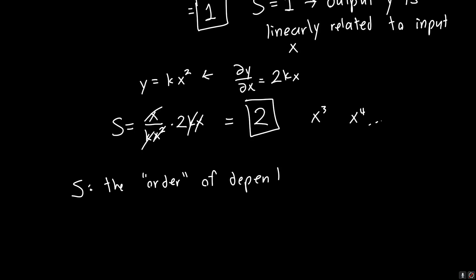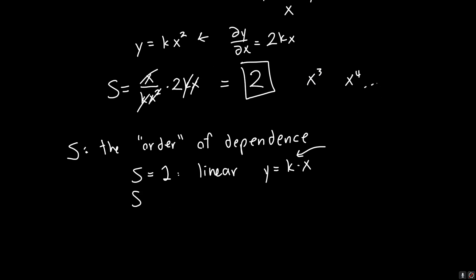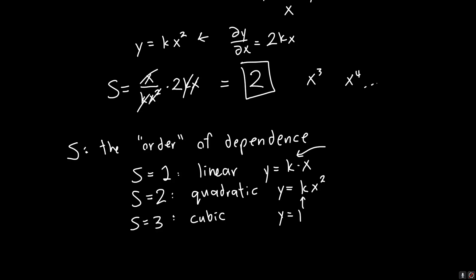A sensitivity of one corresponds to a linear relationship, y equals some a times x. The cool thing about sensitivity is it's a coefficient-independent and unit-independent way of specifying what the dependence is. A sensitivity of 2 is quadratic: y equals some k times x squared. A sensitivity of 3 means the relationship is cubic: y equals some coefficient times x cubed, and so on.